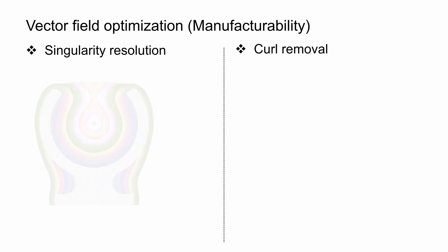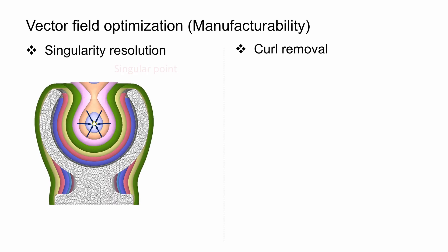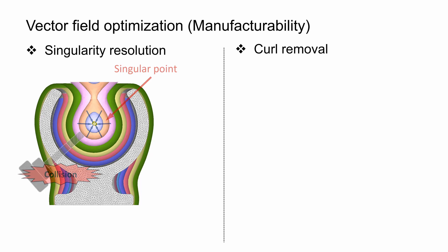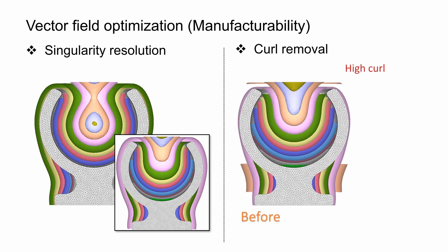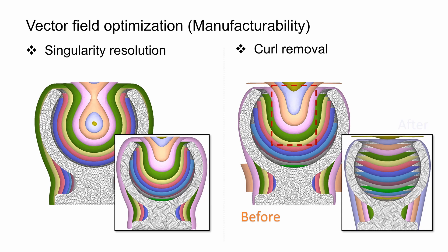As we saw here, by controlling the points of singularity, we can prevent potential collisions during machining as well as isolated volumes of material. Further, controlling the curl of the vector field prevents any undesired distortion in the layers, as well as allows the vector field to accurately control the layer shape.